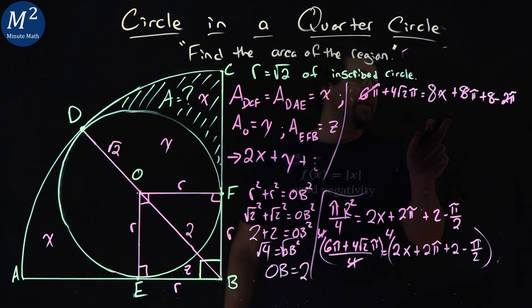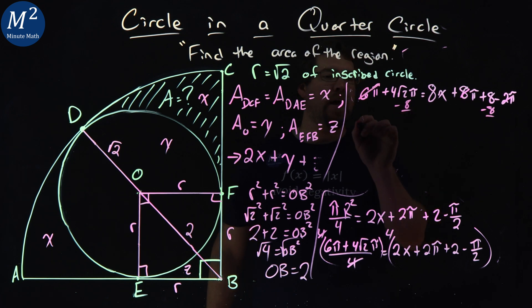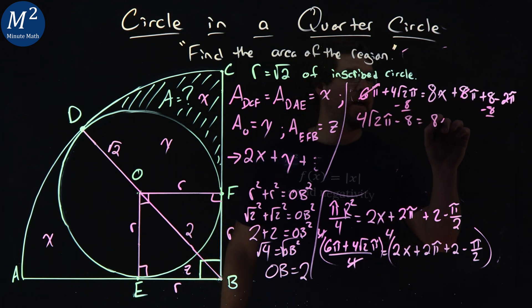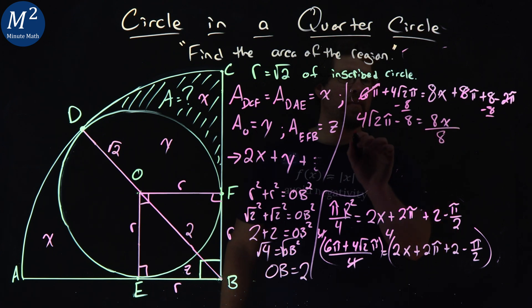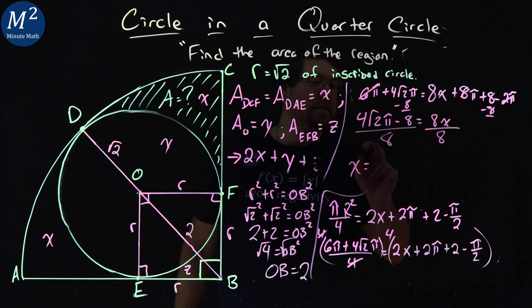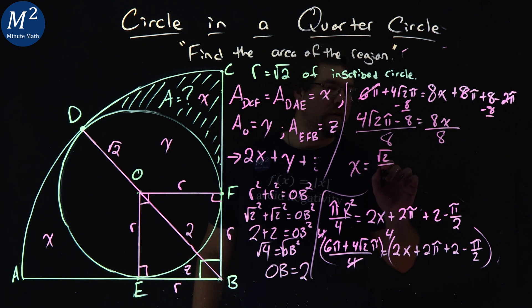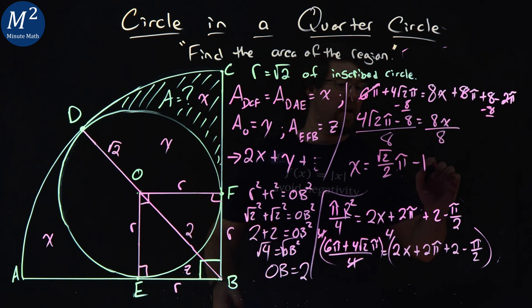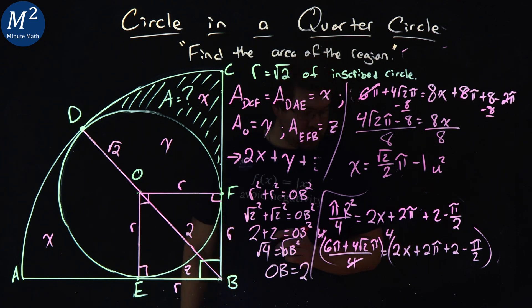From there, let's bring that 8 over to both sides, and we have 4 square root of 2 pi minus 8 equals 8X. Divide both sides by 8, and we get X by itself, which is, divide that out, we have square root of 2 over 2 pi minus 1. And that's X equals the area units squared of our region.